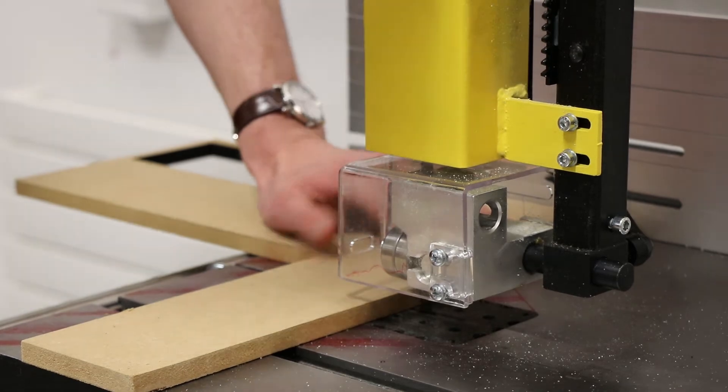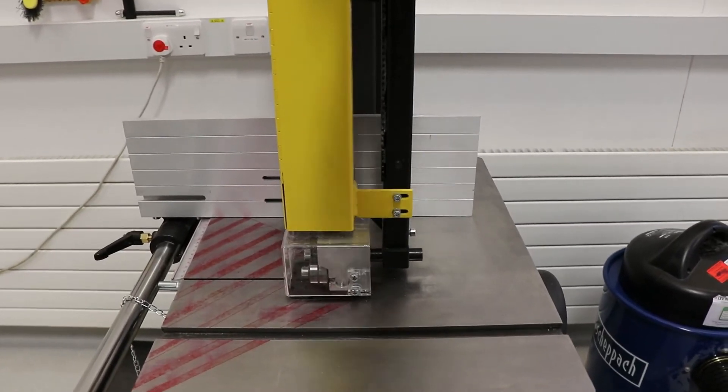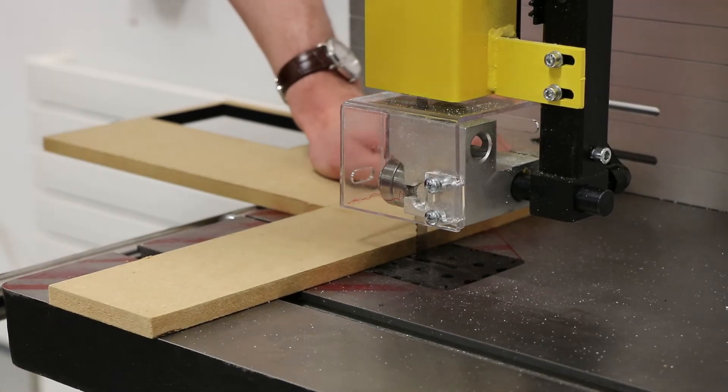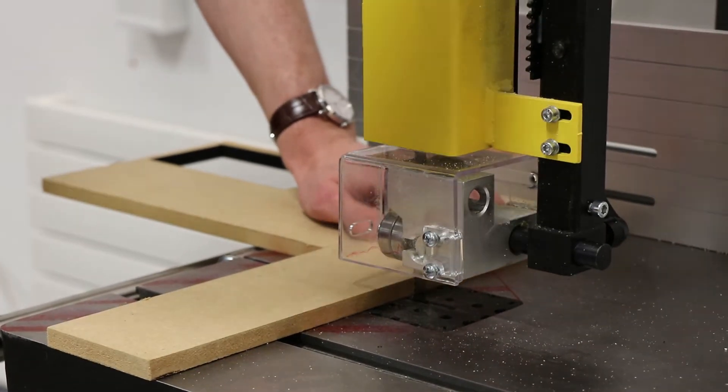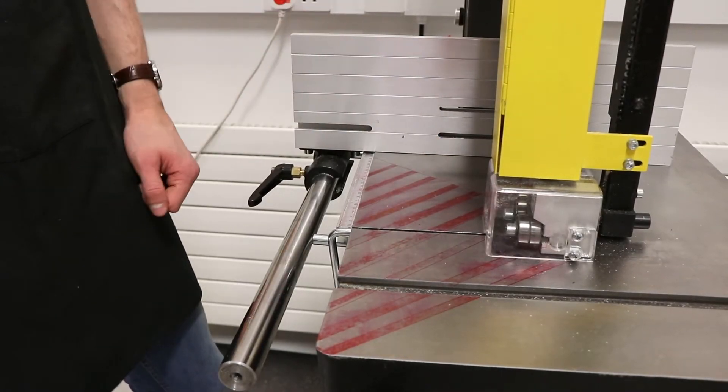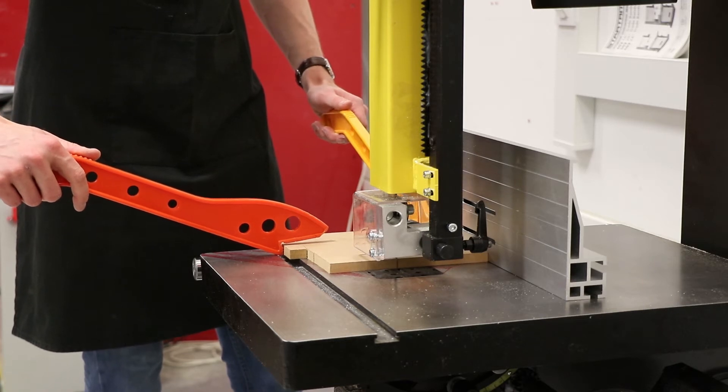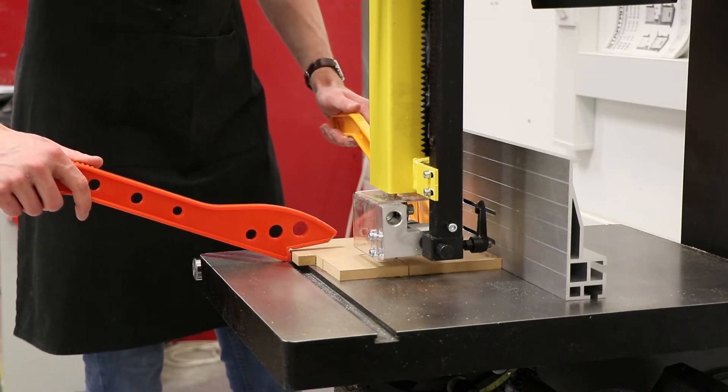When you're done using the bandsaw please extend the guide down to the bed. When pushing material through the bandsaw it is important to keep your fingers out of the cutting area which is marked here on the bed. Use a push stick where necessary and keep any loose hair or clothing tied back when using the machine.